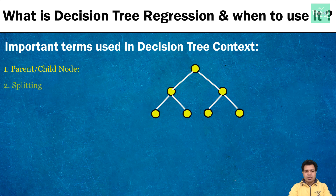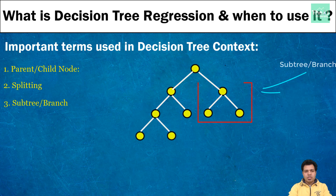The second concept is splitting, which means dividing a node into two or more subnodes. Here we can see that this parent node is split into two subnodes. The third concept is sub-tree or branch, which actually represents a small section or part of the entire tree. If we divide this subnode into two or more subnodes, then this section will be referred to as a sub-tree or branch.